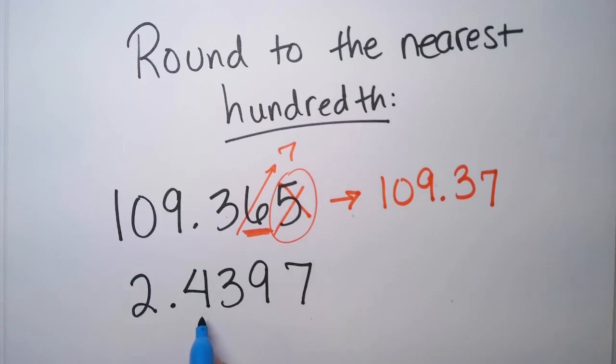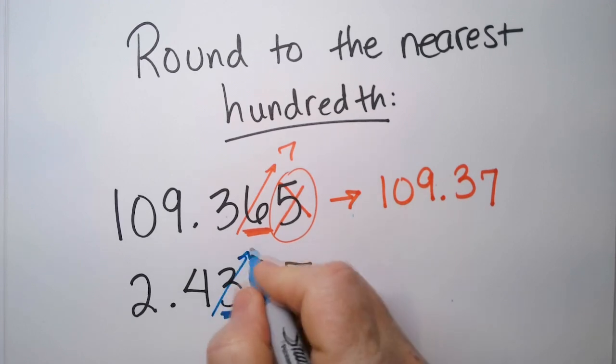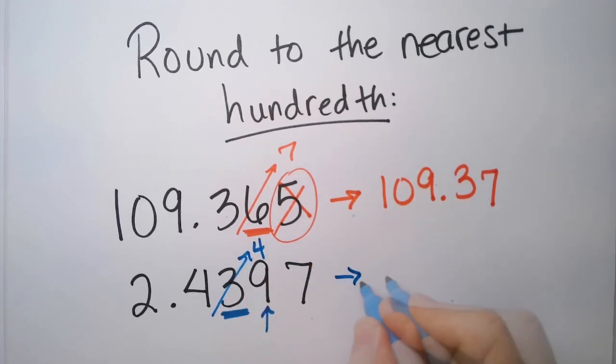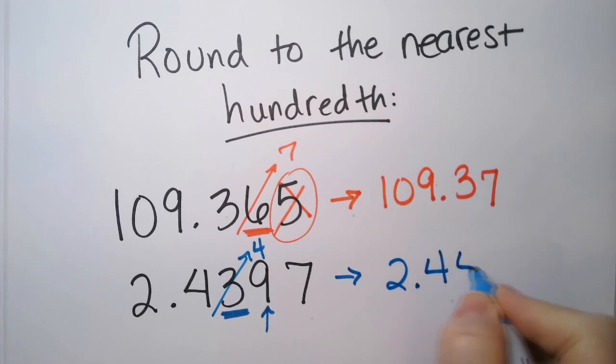Let's look at this one. This is the tenths, and this is the hundredths. So we're going to peak here. I see this is a 9. That tells me that since it's above, 5 or above, that this is going to bump up as well. So that's going to bump up to a 4. My answer is 2.44.